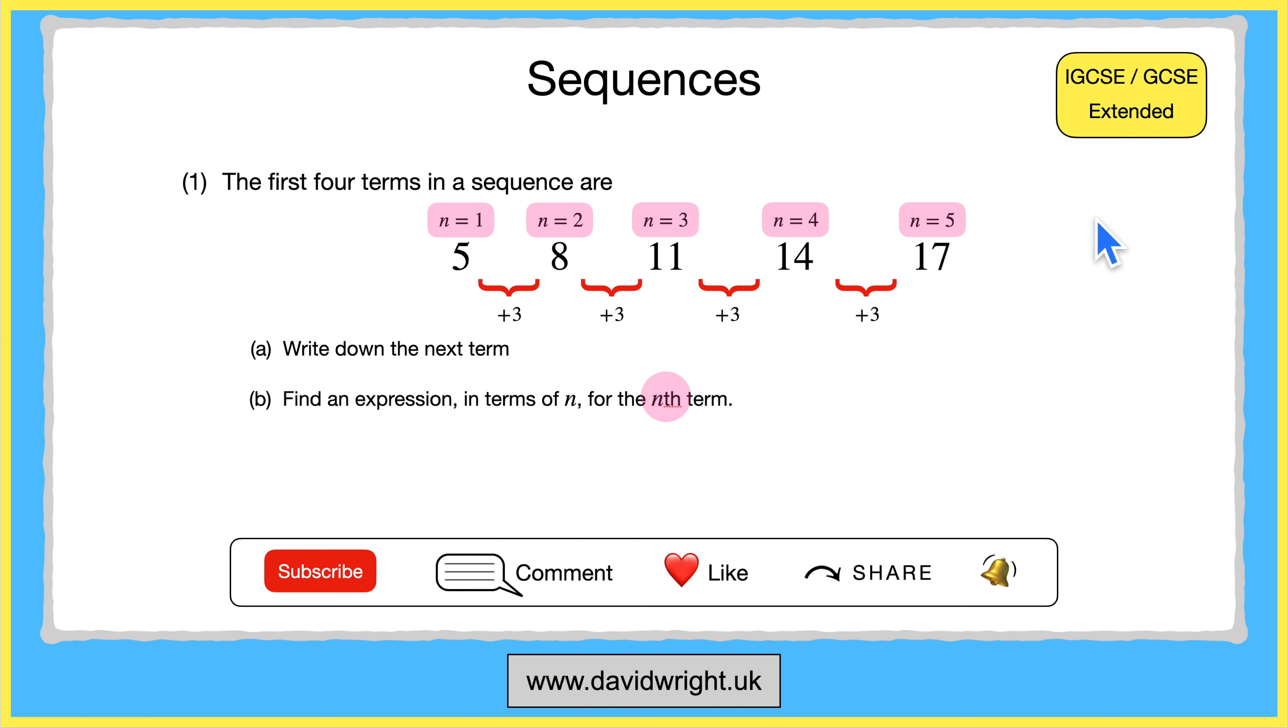Because if we wanted to find the 200th number in the sequence it would take us a long time to write out the sequence as a long list of numbers. So we need to use an algebraic expression to speed things up. So to do this we use the following formula where the nth term equals d times n plus a minus d.